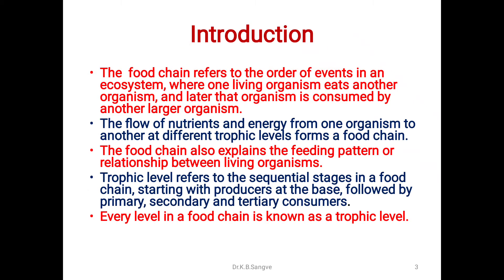Introduction: the food chain refers to the order of events in an ecosystem where one living organism eats another organism and that organism is consumed by another larger organism. The flow of nutrients and energy from one organism to another at different trophic levels forms a food chain. The food chain also explains the feeding pattern and relationship between living organisms. Trophic level refers to the sequential stage in a food chain, starting with producers at the base, followed by primary, secondary, and tertiary consumers. Every level in a food chain is known as a trophic level.